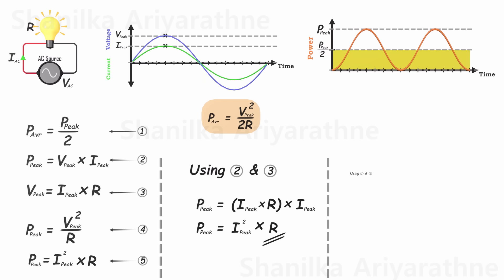Now, employing equations 1 and 5, we can formulate the expression for average power using current and resistance. The average power of an AC power circuit equals the squared peak current multiplied by the resistance, divided by 2.